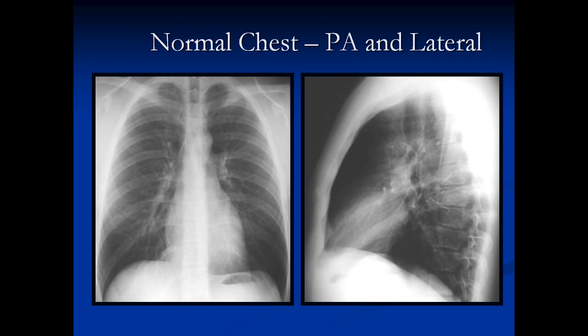We're going to talk a little bit about the normal chest x-ray. These are the normal chest x-rays on this patient, and you can see that they're good quality. You can see the vessels almost everywhere, right in the midline. You can see the spine — the white part — all the way through, and you can see the black airway. We're going to talk about a few of these structures on the next couple of films.